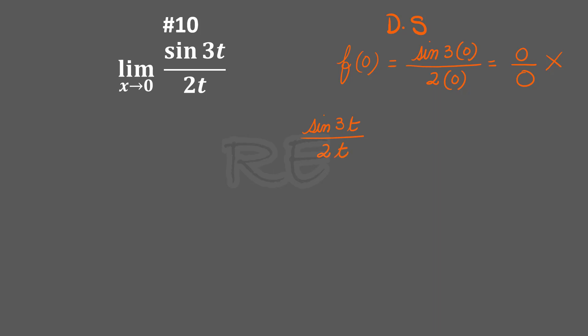We're going to manipulate sin(3t) over 2t. We'll multiply it by 1, which is 3/3. Then the numerator will be 3 sin(3t). For the denominator, we're going to swap 3 for 2, knowing that multiplication is commutative.